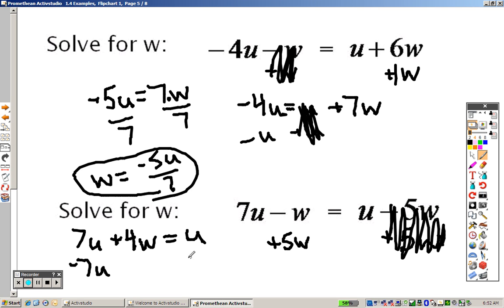Minus 7U, minus 7U. So I end up getting 4W equals negative 6U. And to get W by itself, I would divide by 4.